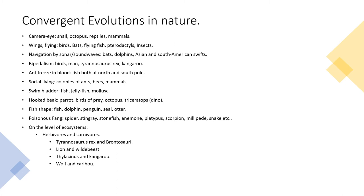Another example of convergent evolution is living in social communities — seen in many species of ants, bees, and mammals. The swim bladder is used by fish, jellyfish, and mollusks. A hooked beak: parrots, birds of prey, octopuses, and Triceratops — a species of dinosaur — all ended up with the same solution. The fish shape: of course fish, but also dolphins, penguins, seals, and otters have it. There is only one body shape superior for moving fast and efficiently in water. A shark and a dolphin resemble each other much more than a horse and a dolphin, but the latter two are far more closely related genetically. Poisonous fangs: spiders, stingrays, stonefish, anemones, platypus, scorpions, millipedes, snakes — the list seems endless.